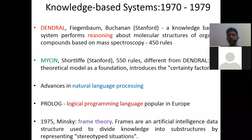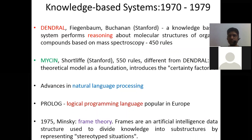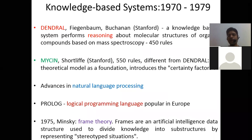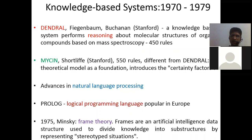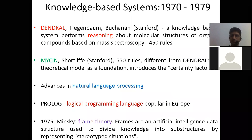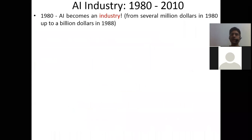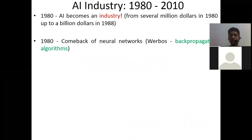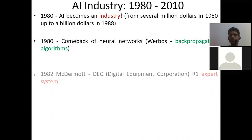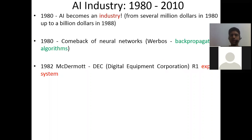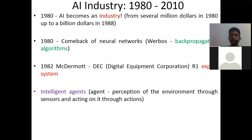Frames are data structures that display knowledge into sub-structures representing stereotype situations. Then from 1980 to 2010, AI becomes an industry itself. In 1980 we have the backpropagation algorithm. In 1982 we have the Digital Equipment Corporation expert system. And then intelligent agents come into the picture, which is our next topic of today's class.